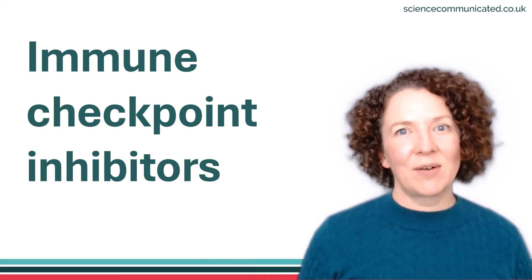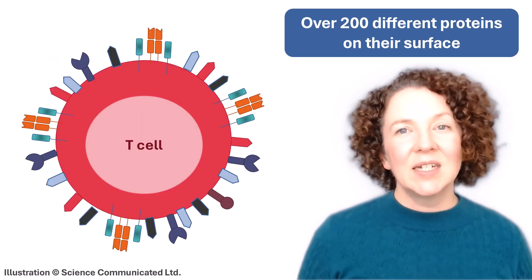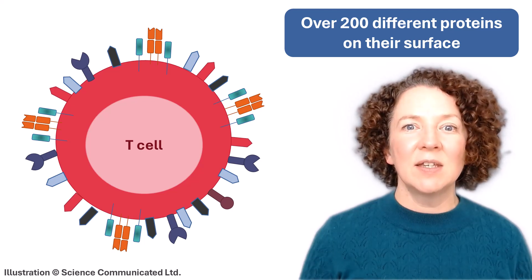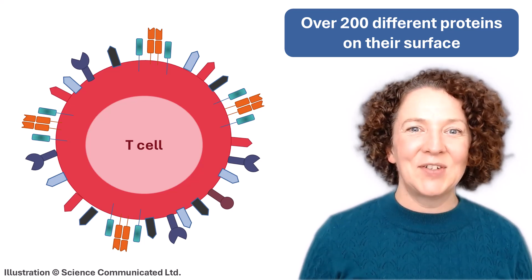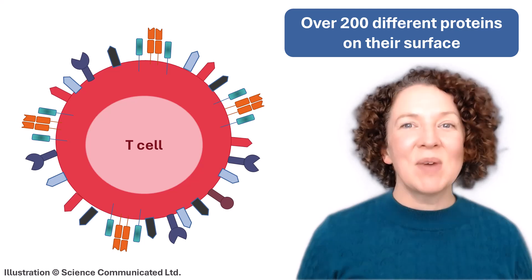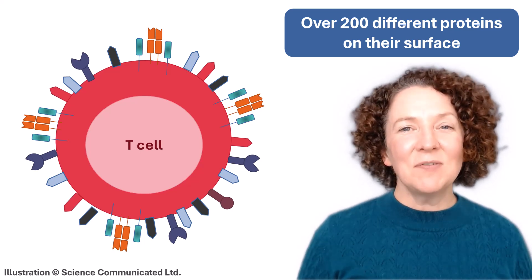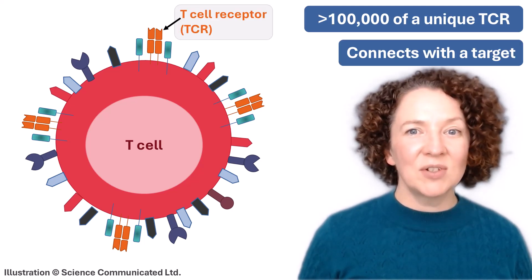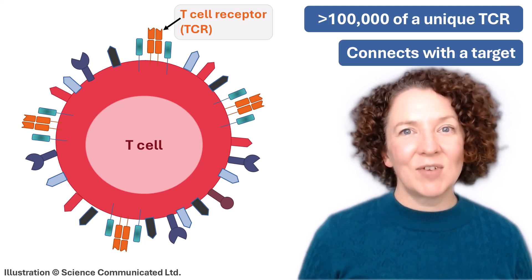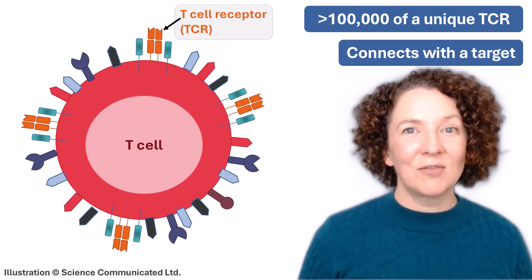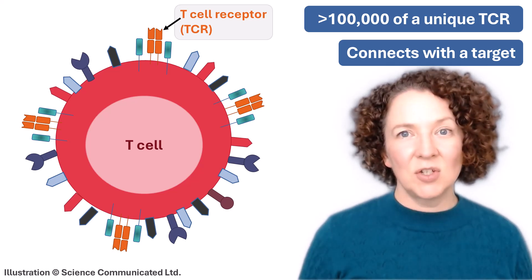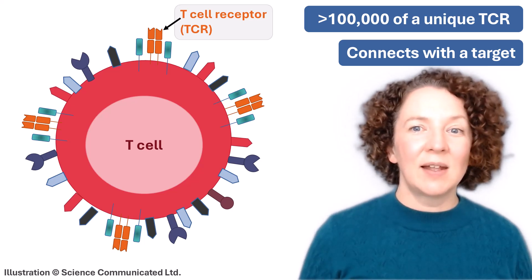Let's start with some background on T cells. T cells have over 200 different proteins sticking out of their surface, obviously a whole lot smaller than I've shown. Even more mind-boggling than the number of different proteins is the number of copies of each one. For example, there are about 100,000 copies of the T cell receptor on the surface of each T cell.